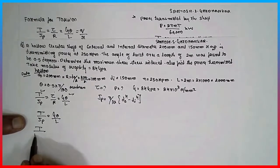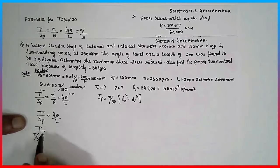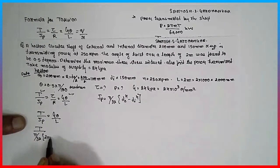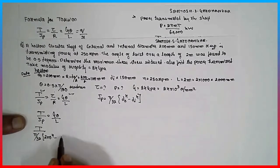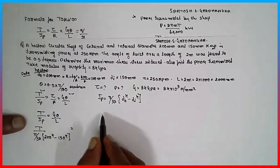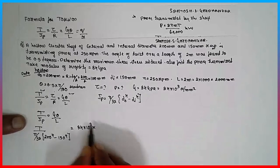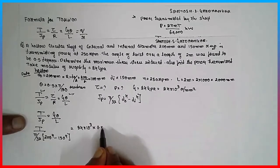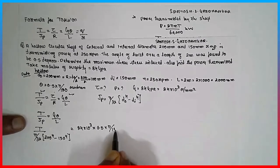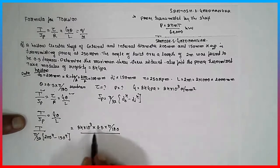T divided by pi divided by 32, D₀ 200, outer diameter is 200 raised to 4 minus 150 raised to 4, is equal to 84 into 10 raised to 3 into 0.5 into pi divided by 180 divided by 2000.